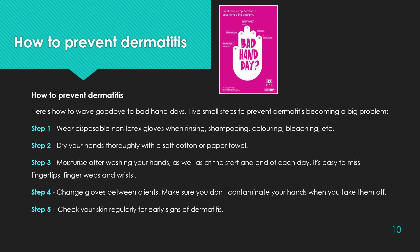How to prevent dermatitis — 5 small steps to prevent dermatitis becoming a big problem. Step 1: Wear disposable non-latex gloves when rinsing, shampooing, coloring, bleaching, etc. Step 2: Dry your hands thoroughly with a soft cotton or paper towel. Step 3: Moisturize after washing your hands, as well as at the start and end of each day — it's easy to miss fingertips, finger webs, and wrists. Step 4: Change gloves between clients and make sure you don't contaminate your hands when you take them off. Step 5: Check your skin regularly for early signs of dermatitis.